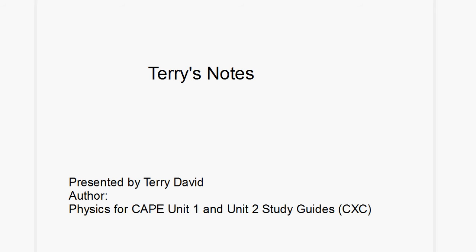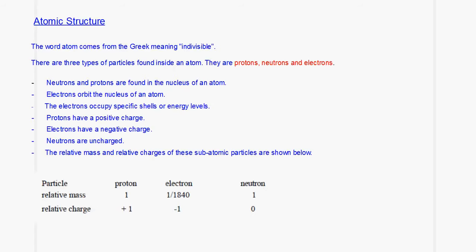Welcome to another episode of Terry's Notes and today we are going to be looking at Atomic Structure. The word atom comes from the Greek meaning indivisible. Now inside an atom we find the following particles: protons, neutrons and electrons.